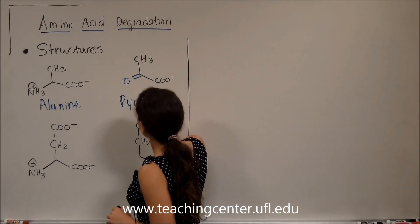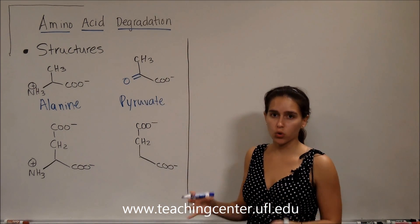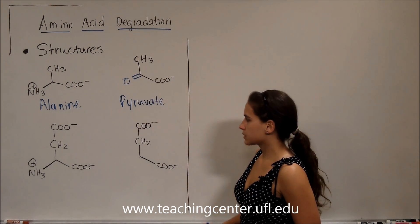Remember that pyruvate is going to have three carbons because we split that glucose into two pyruvate. Glucose has six carbons, so pyruvate is going to have three carbons.